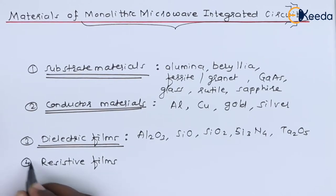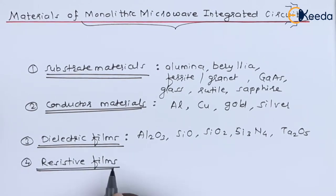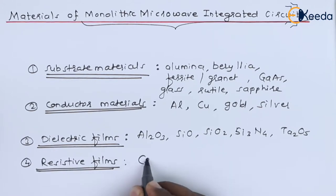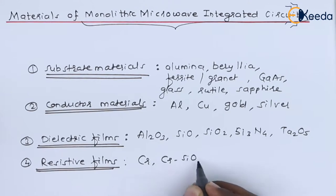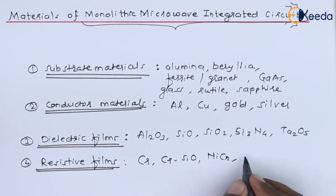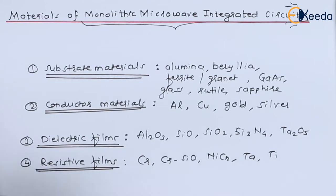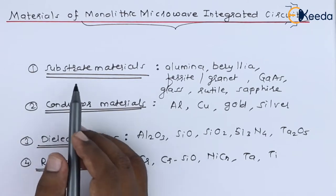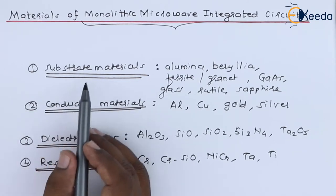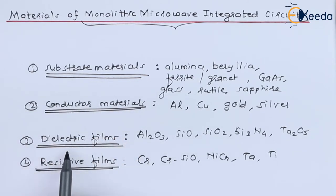For the fourth type, the resistive films, we have the options of Cr, CrSiO, NiCr compound, Ta, and Ti. Let us now discuss one by one the materials for substrate, conductor, dielectric, and resistive types.